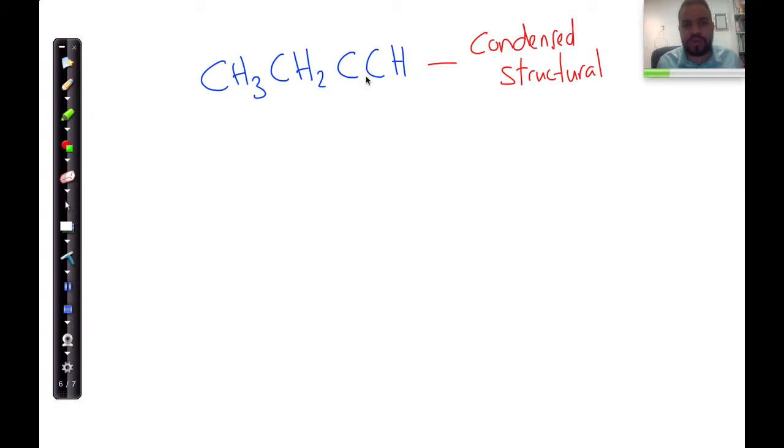How many carbons do I have over here? One, two, three, four. So four carbons. Now let's count the hydrogens. Three, four, five, six.